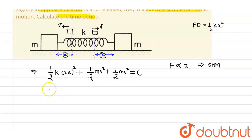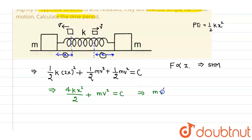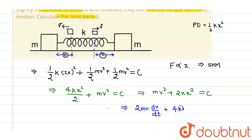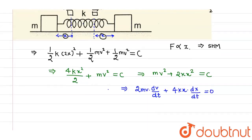Manipulating the energy expression: 4kx²/2 + mv² = C, which simplifies to mv² + 2kx² = constant. Differentiating this relation gives 2mv(dv/dt) + 4kx(dx/dt) = 0, since C is a constant.